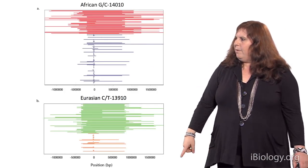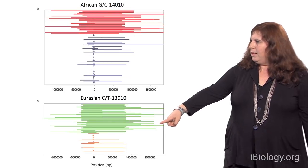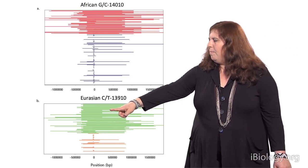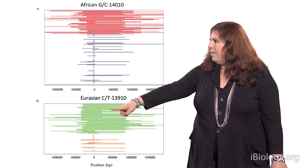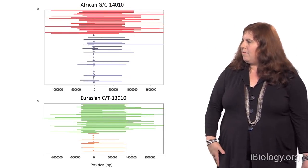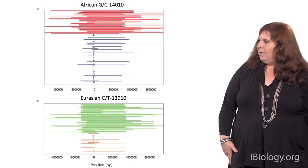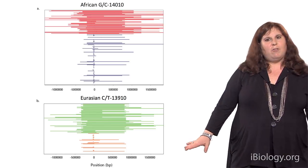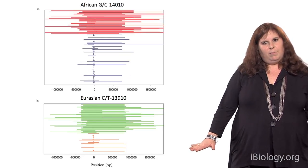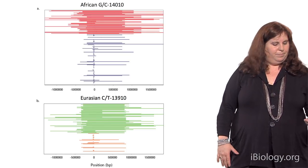The European variant, where the T allele is associated with lactose tolerance, shows a very similar pattern of extended haplotype homozygosity.